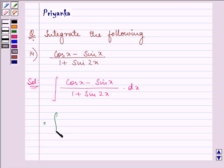Now we have cos x minus sin x divided by, we can write 1 as sin square x plus cos square x, isn't it?